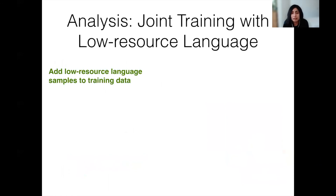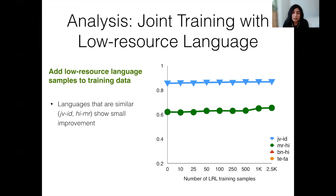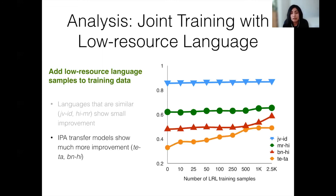For some of the languages in our dataset, although they are low-resource, there is a small amount of data available for training. We combine different amounts of this data with the high-resource language dataset and train the model on the combined dataset to evaluate its effect on entity linking performance. We first see that languages that are closely related, share a script, and start off with pretty high accuracy show only a small improvement as we add training samples in the source low-resource language. On the other hand, models that rely on the IPA representations for transfer show much more improvement when adding data from the source language.